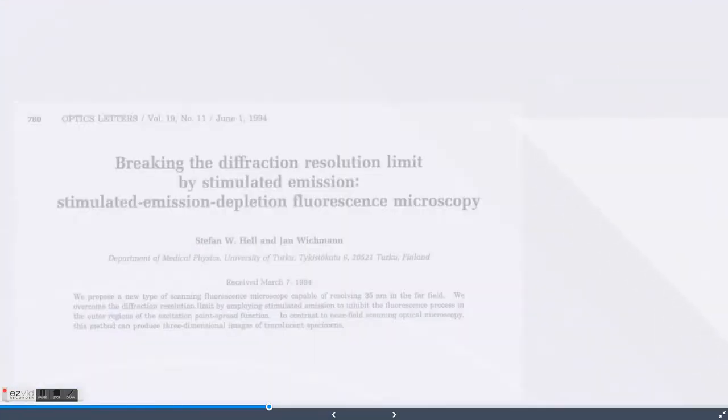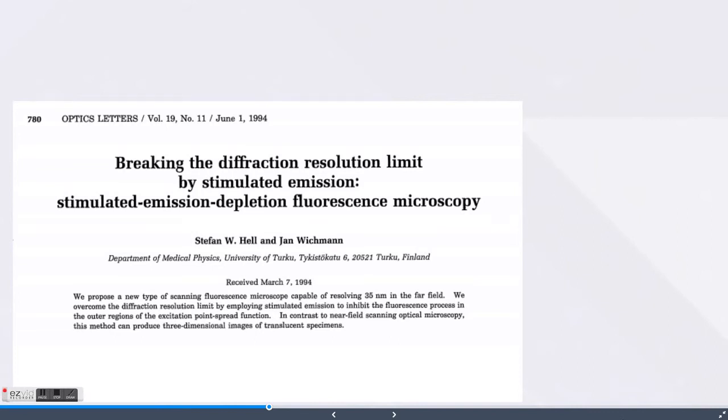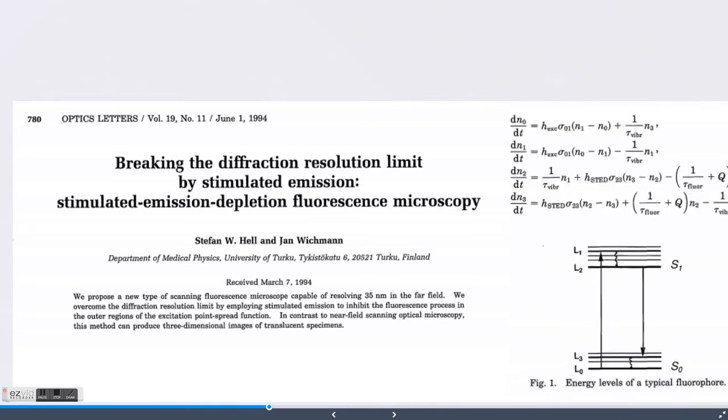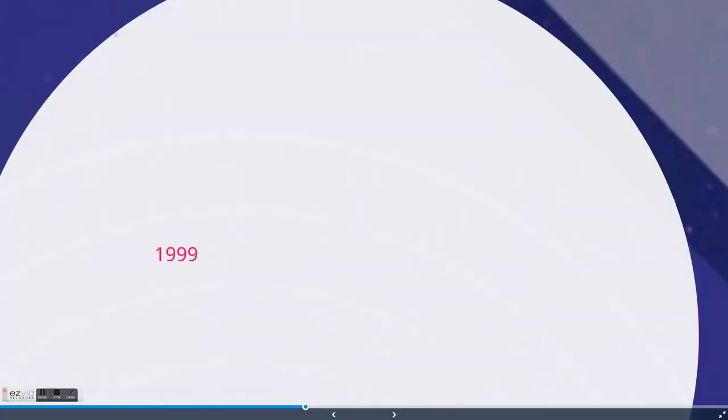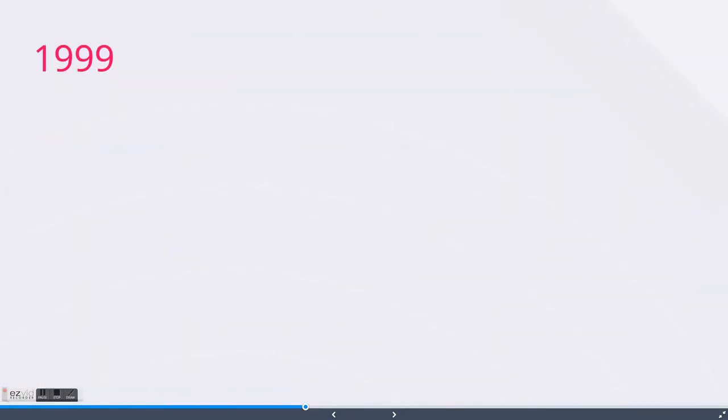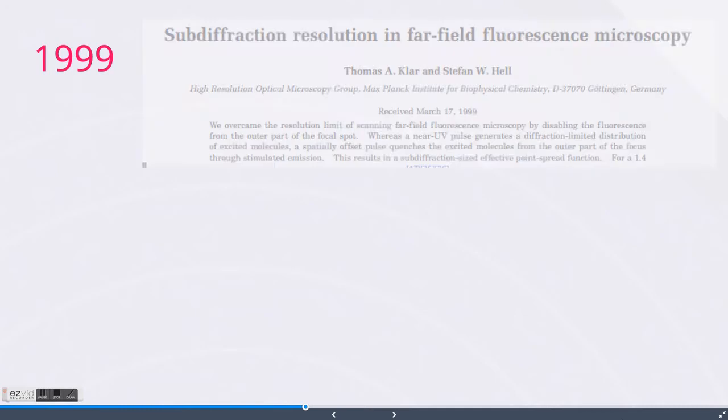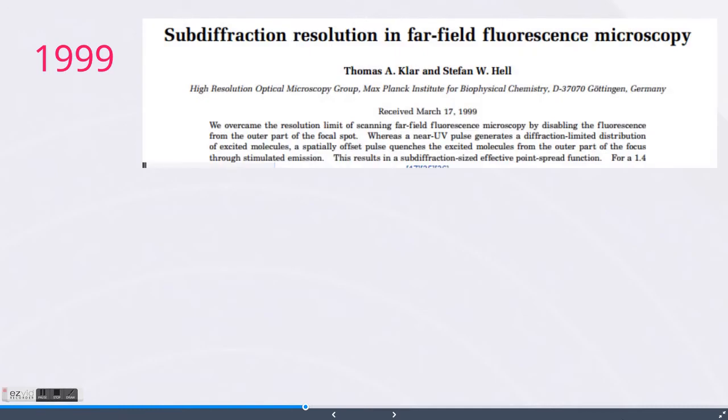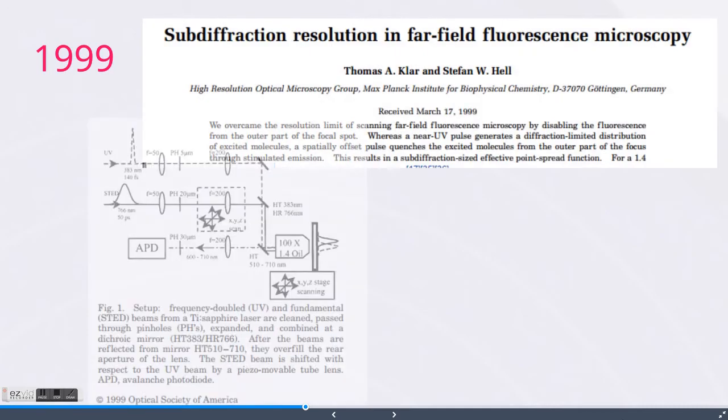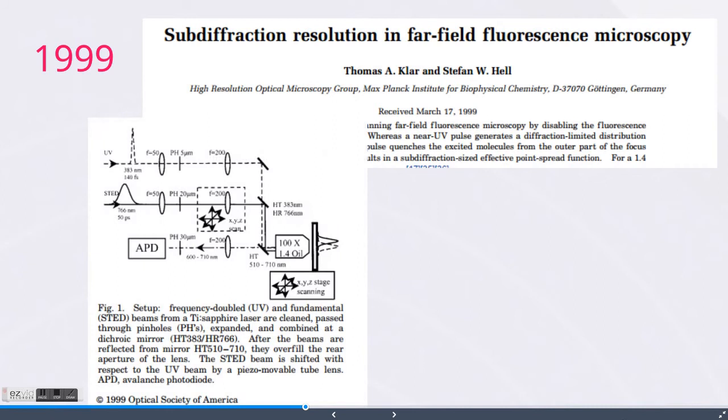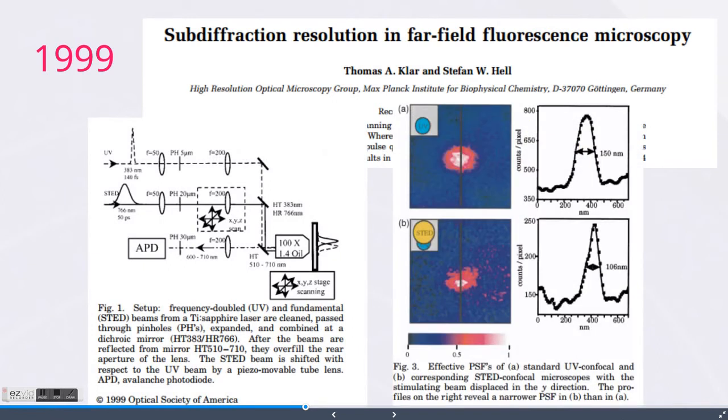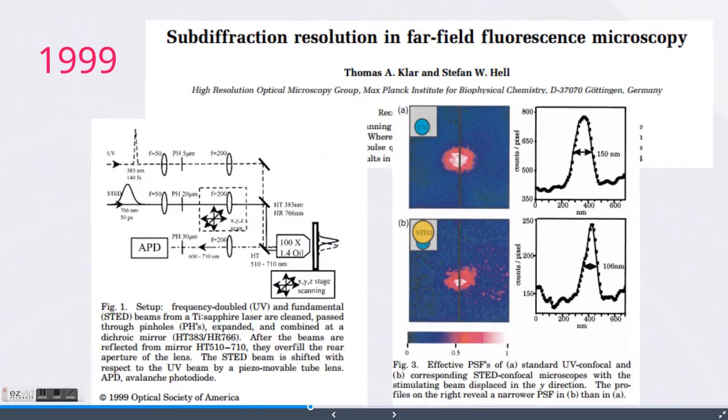He published a paper along with Wickman demonstrating the theoretical principles and outlining the experimental condition for this new concept, simulated emission depletion fluorescent microscopy. People were skeptical, but then five years later, Hell and Klar published a paper showing that they actually assembled a fluorescent microscope sophisticated enough to provide the experimental proof of principle for STED microscopy.